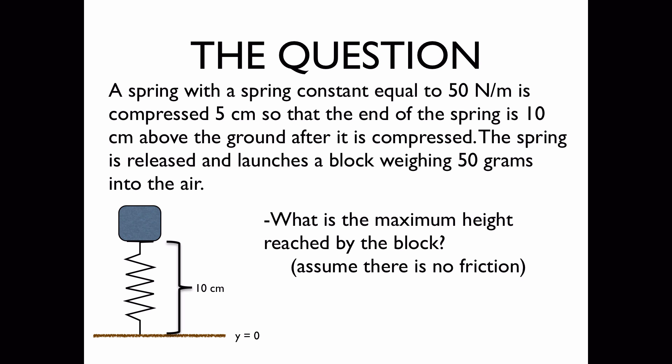This is video 5.4, the spring-loaded launch. The question: A spring with a spring constant equal to 50 N per meter is compressed 5 cm so that the end of the spring is 10 cm above the ground after it is compressed. The spring is released and launches a block weighing 50 grams into the air. We'd like to know what is the maximum height reached by the block, assuming there is no friction.